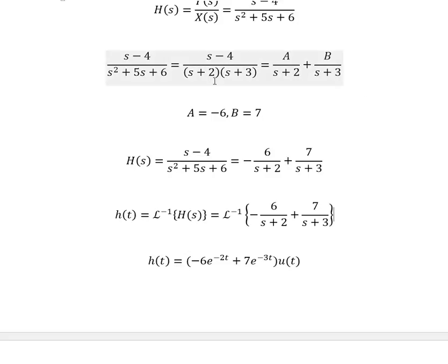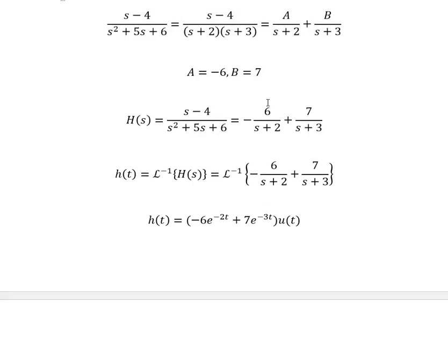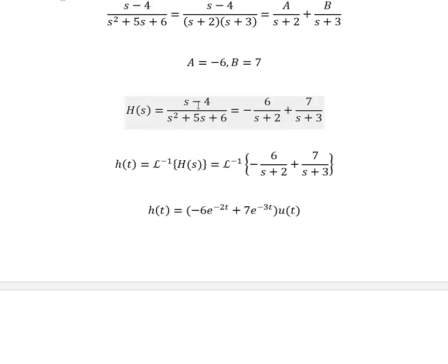If I have my H(s) defined by this function, I can use partial fraction expansion. And I'm going to get that my H(s) equals s minus 4 divided by s squared plus 5s plus 6, and this is the same that I write this term over here on the right side of my equation.